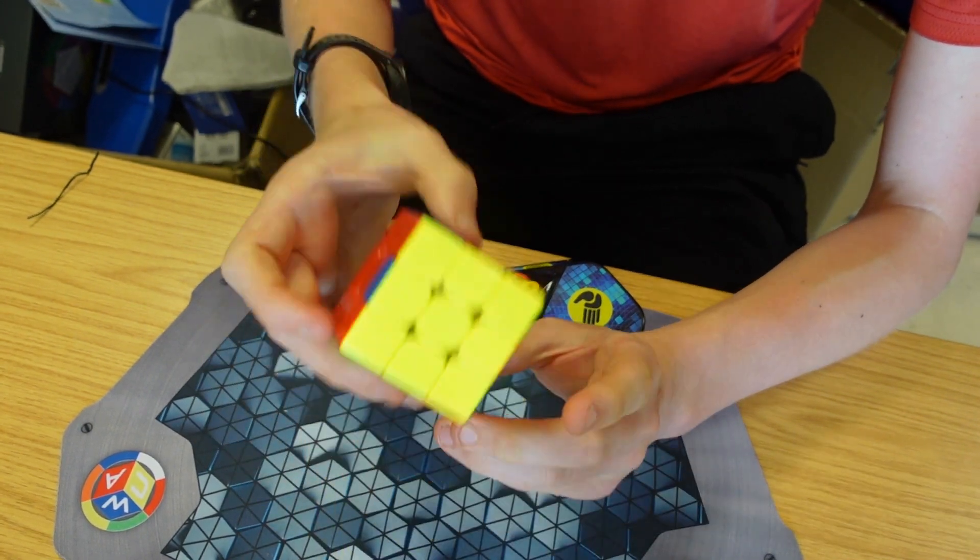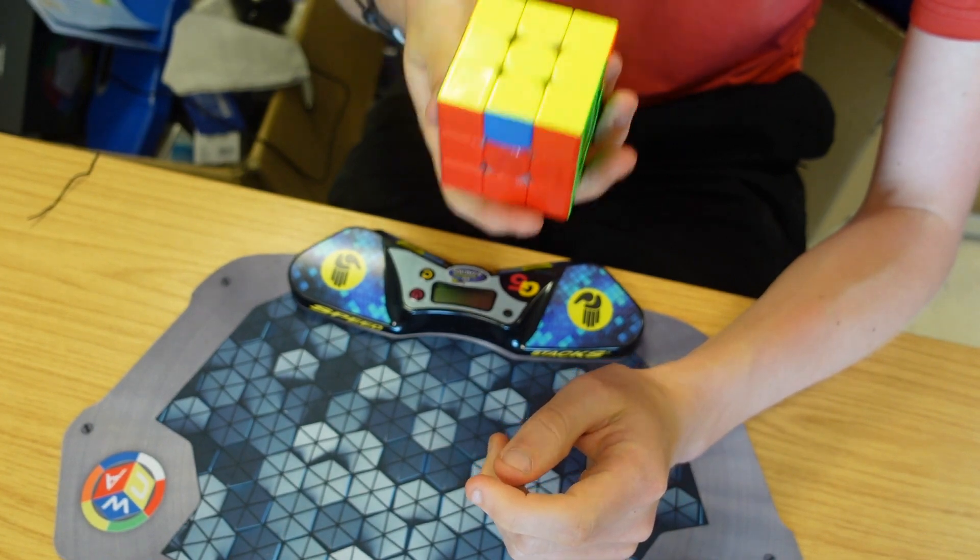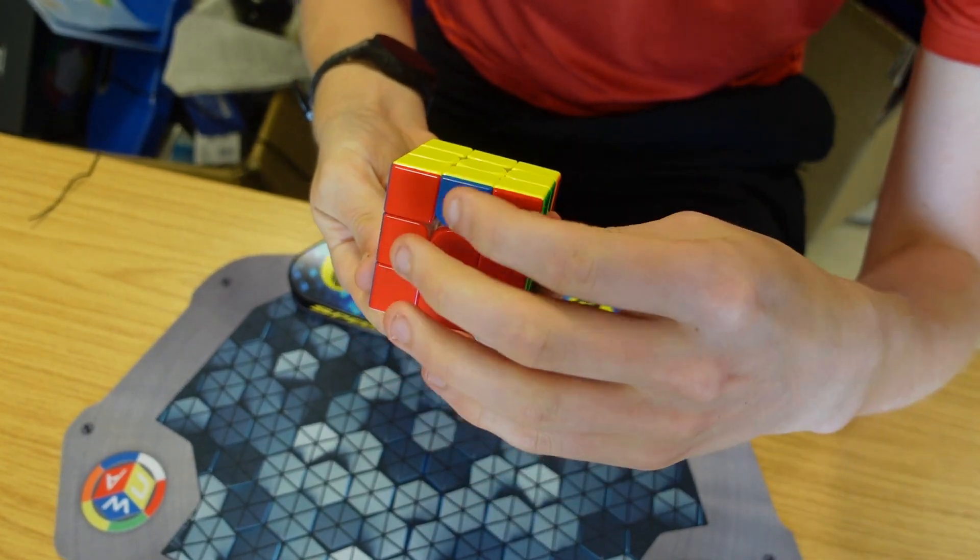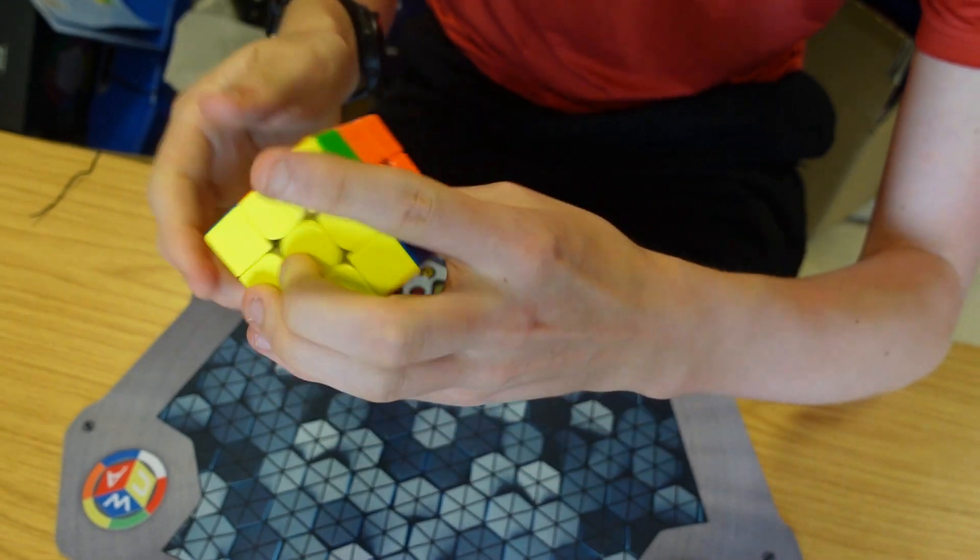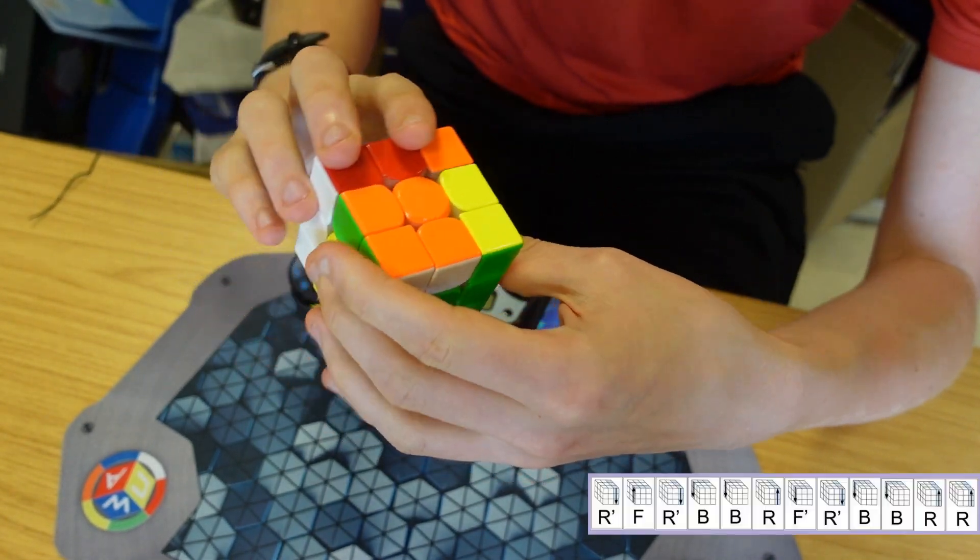Then we need to check to see if there are two correct corners in the correct place. Here we've got these two red corners. We hold them at the back and do an algorithm to swap the two corners.